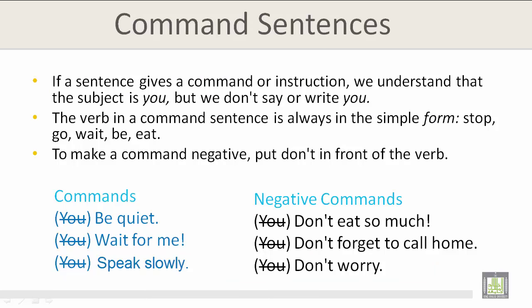Command sentences: if a sentence gives you a command or instruction, we understand that the subject is you, but we don't say or write 'you.' The verb in a command sentence is always in the simple form: stop, go, wait, be, eat. Examples: Be quiet. Wait for me. Speak slowly. In each of these, the subject is 'you,' but we do not say or write it — we understand that the subject is you.